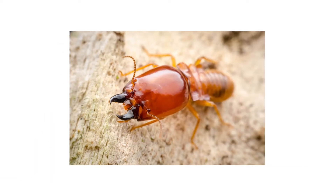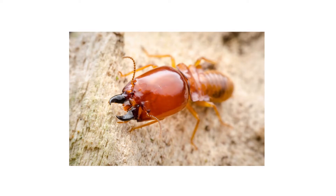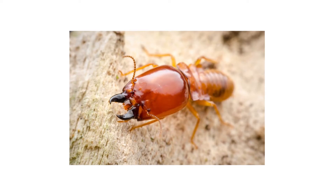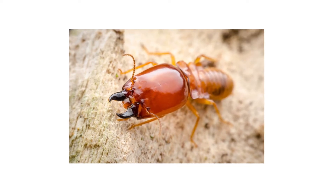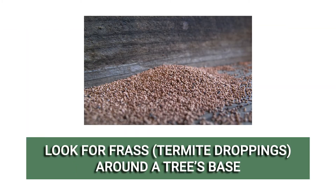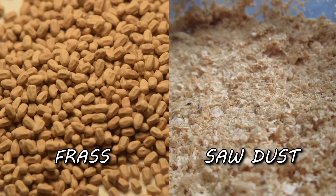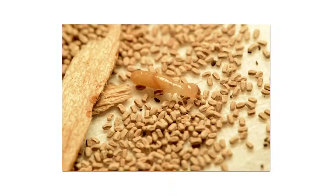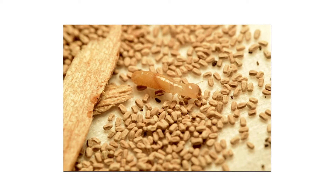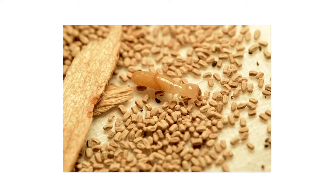Termite activity isn't always obvious, but you can take these easy steps to look for signs of activity. Look for frass, or termite droppings, around the tree's base. Frass looks like sawdust but has a more granular appearance, and is a clear indication of a termite infestation.